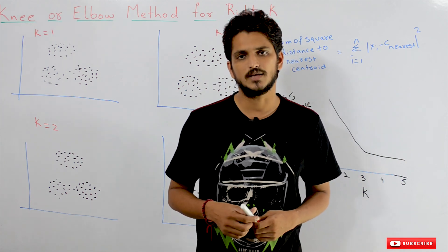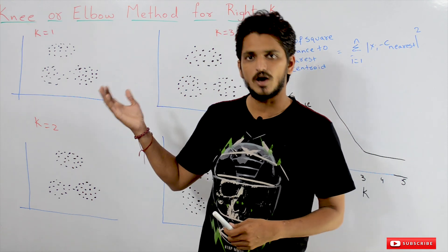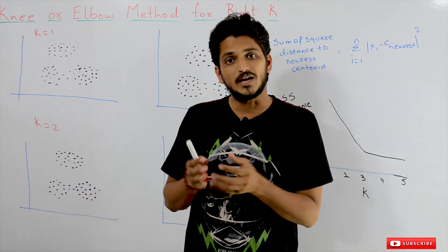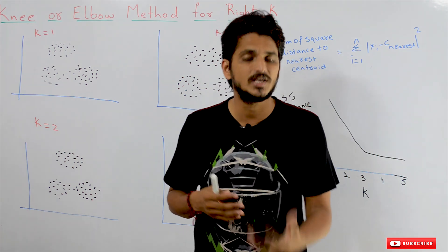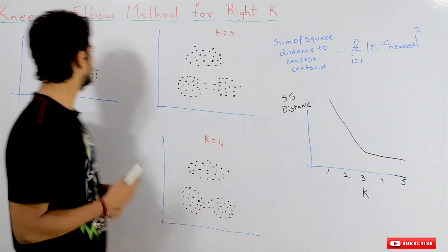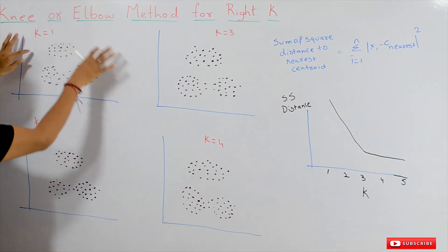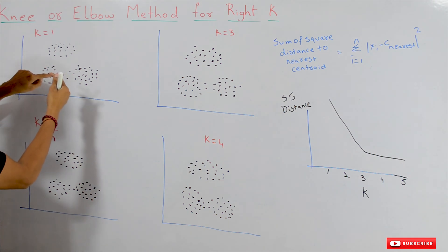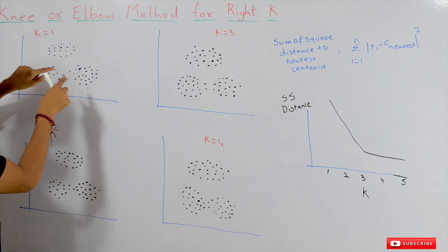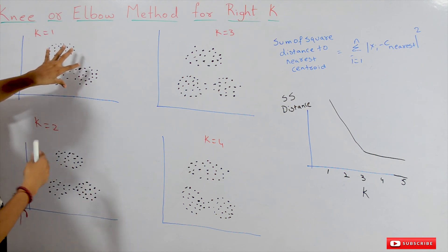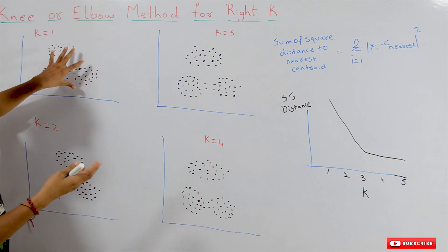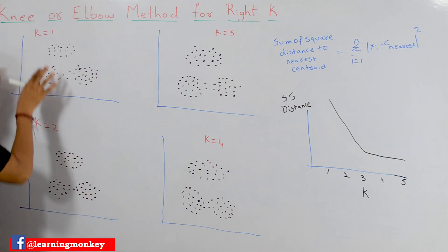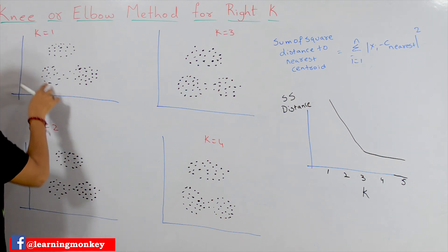Coming to today's class: for understanding the elbow method or knee method, we will take an example and understand what the elbow method is and how it identifies the best K value. The example dataset which we consider here is the same one we already used in our previous classes for identifying the K-means clustering algorithm, so we are moving on without re-explaining the dataset.